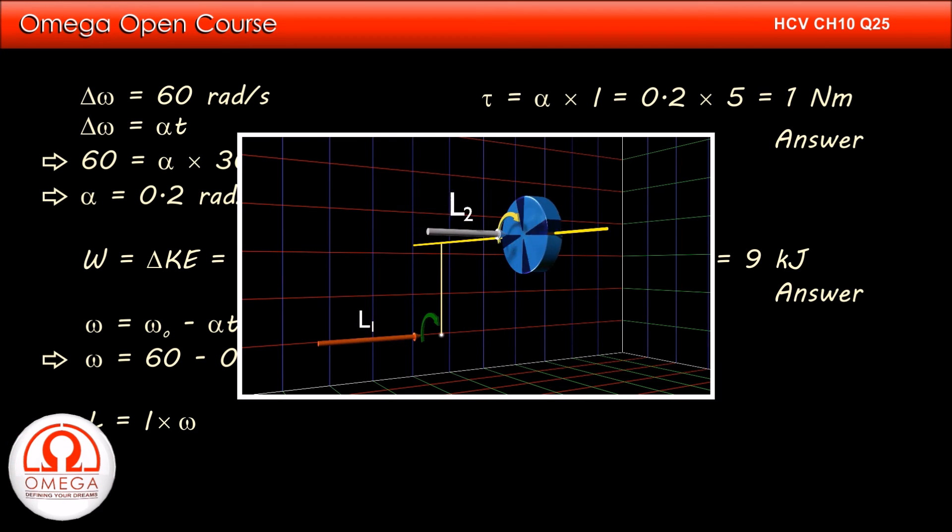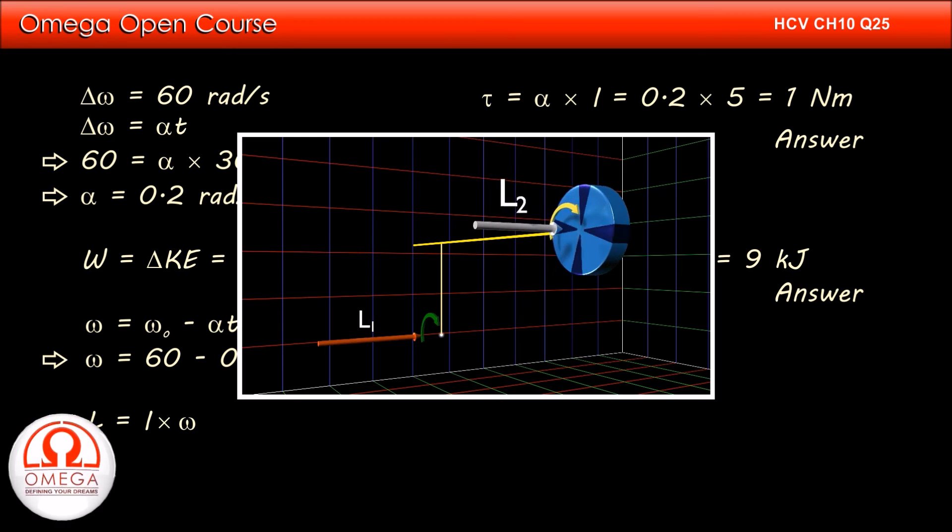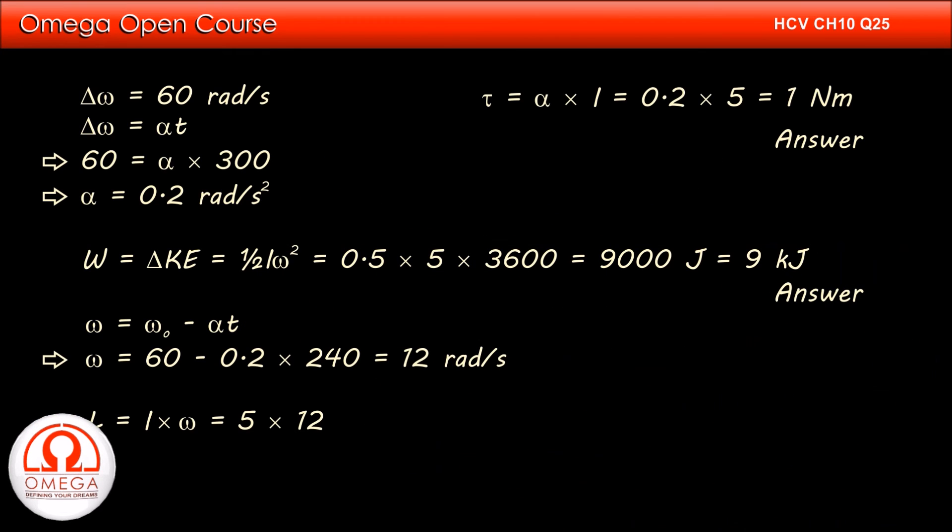The link for the video is shown on the screen and given in the descriptions below. Putting the values, we get 5 × 12 = 60 kg meter square per second. This is answer to part C of the question.